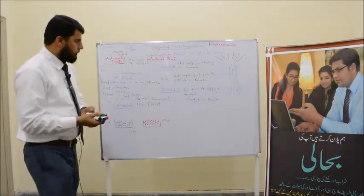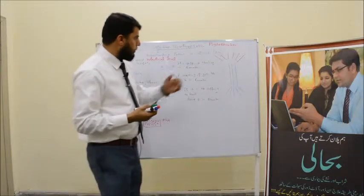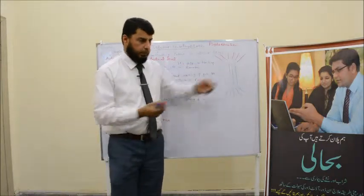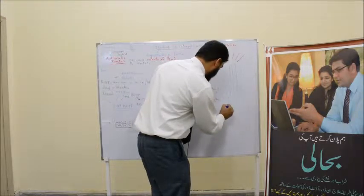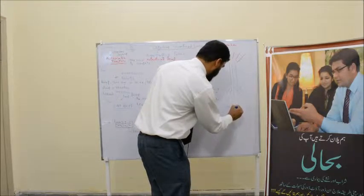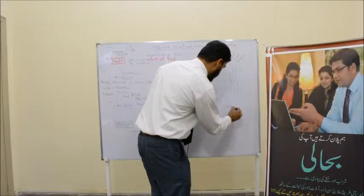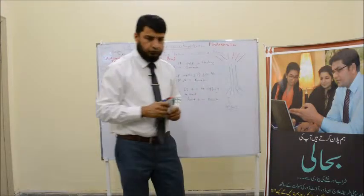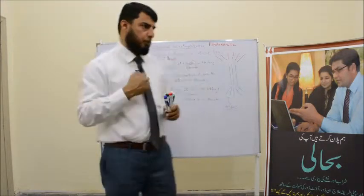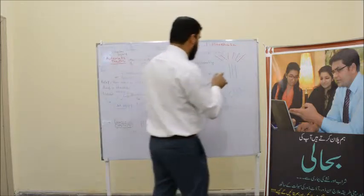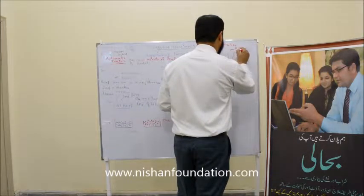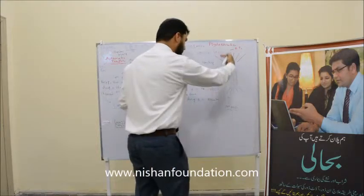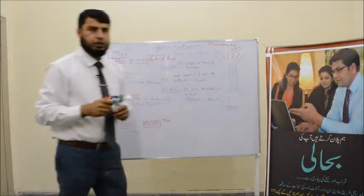In the book we are discussing — a book by Beck — they have given the example of a tree. The roots of a tree resemble core beliefs. Beliefs that originate from childhood are core beliefs. The branches are automatic thoughts. In between, the trunk represents intermediate beliefs.